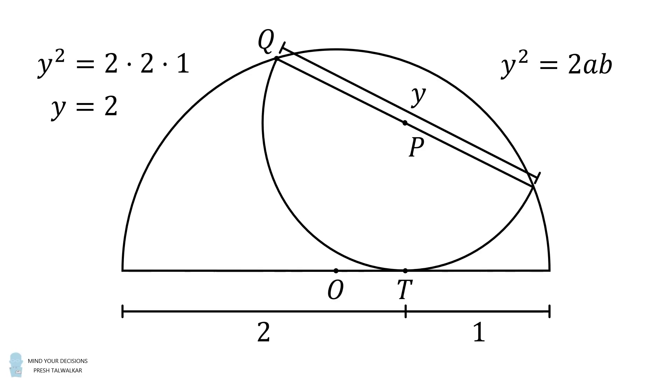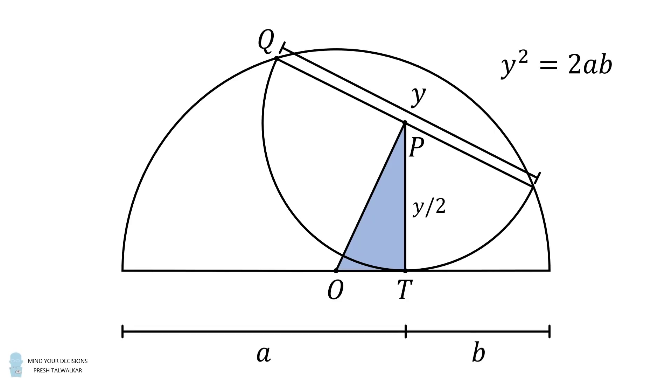Let's now tackle part 3. Consider the triangle OTP. We know that PT is equal to y over 2. Without loss of generality, suppose the large semicircle has a radius equal to 1. Suppose that OT has a length equal to x.